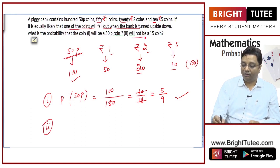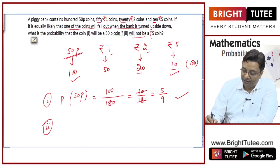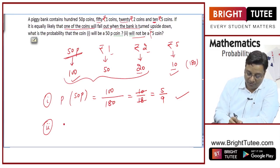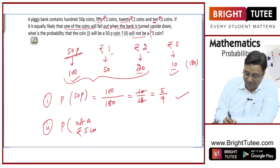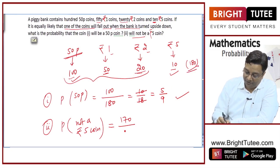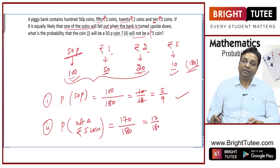What is the probability that the coin will not be a five-rupee coin? Apart from five-rupee coins, we have 100 plus 50 plus 20 equals 170 favorable outcomes. Total is 180. So the probability is 170/180, which simplifies to 17/18.